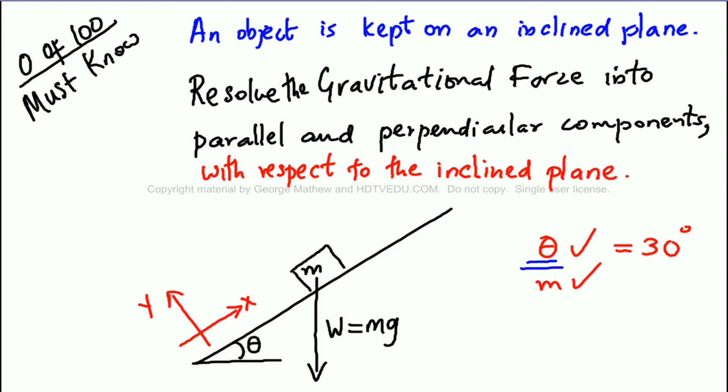Problem 0 of 100: an object is kept on an inclined plane. Resolve the gravitational force into parallel and perpendicular components with respect to the inclined plane.